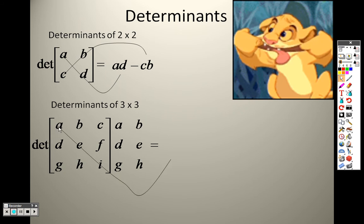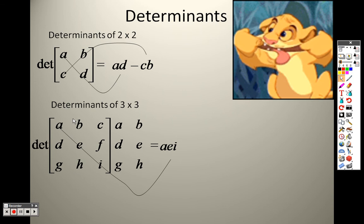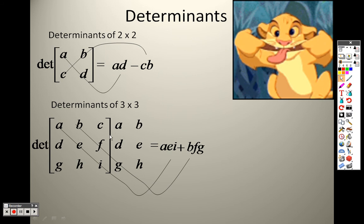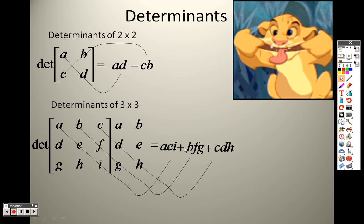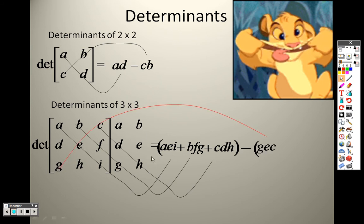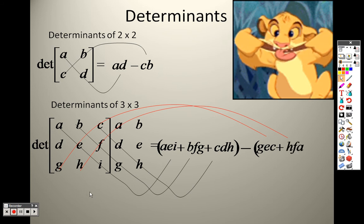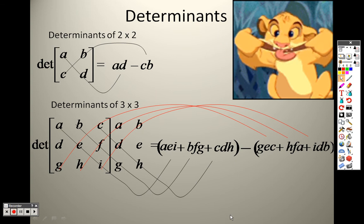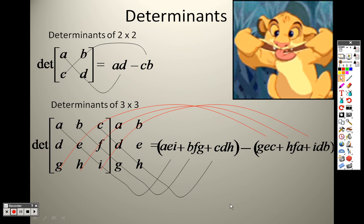Now I can multiply down. So it's AEI, then plus BFG plus CDH. That's all minus, now we go up: GEC plus HFA plus IDB. That gives you a determinant for a 3 by 3 matrix. For 2 by 2, which is very simple, remember it's down minus up. Down, minus up. That's how you do it.